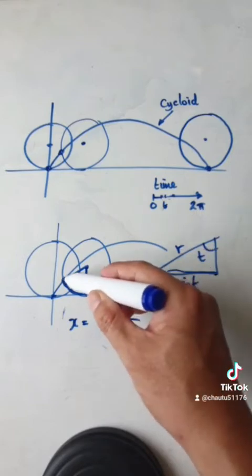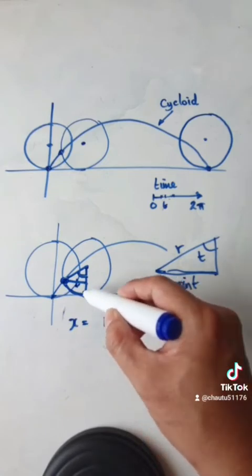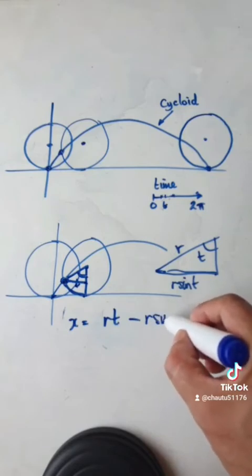So the x location of this point here would be this length, which is rt, take away from here to here, which is r sine t.